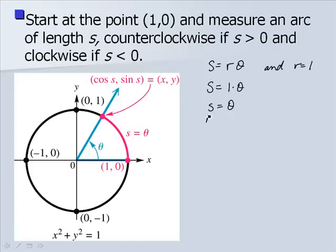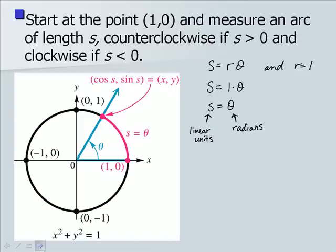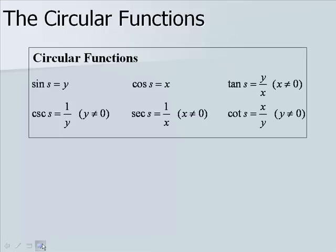Here, s is in linear units — like centimeters, meters, or inches — while theta is in radians. So the trig functions of angle theta in radians, found by choosing a point (x, y) on the unit circle, can be rewritten as functions of arc length s, which is a real number. When we do that, they are called the circular functions.